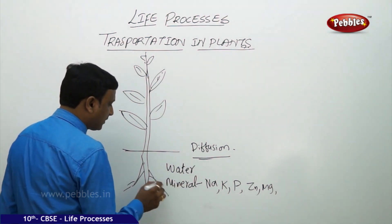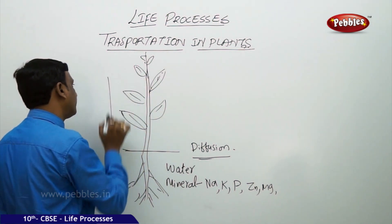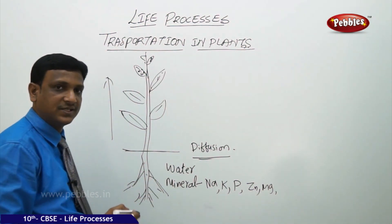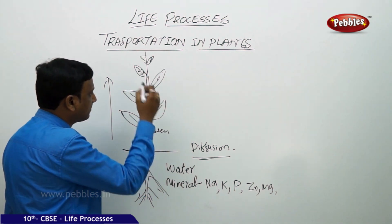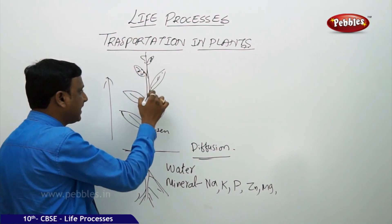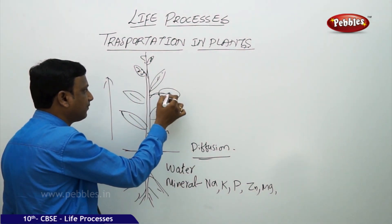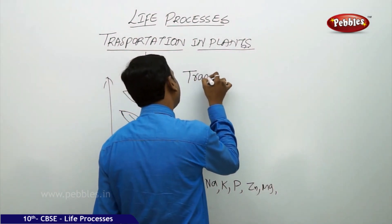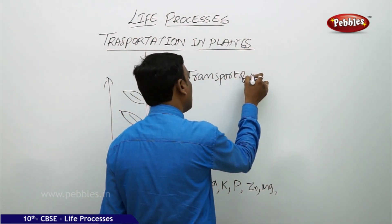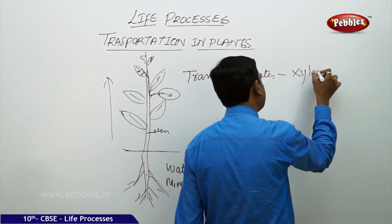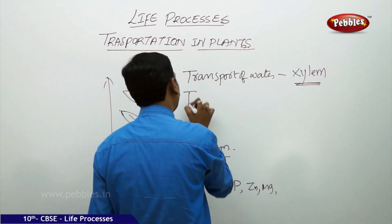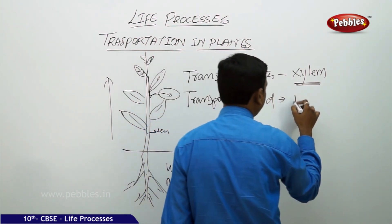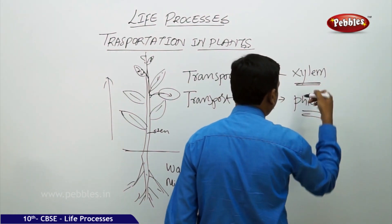Water transport is one-way, from roots to the tip of the plant. Food is prepared in the leaves and sometimes must be stored in the roots, as in carrots, or in the stem, or in the fruit. So the food produced in the leaf has to be transported to where it is needed. The transport of water and minerals is done by a special tissue called xylem, and the transport of food and other materials is done by phloem. These two tissues form the vascular tissue.